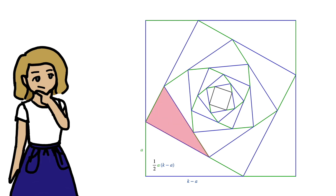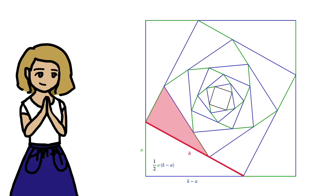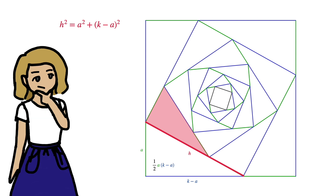What about this triangle? Well, first we need this length, which I'll denote as h. Using Pythagoras's theorem, h squared equals a squared plus k minus a squared, which I'll leave as is. Now we need to divide h into the ratio a to k minus a.